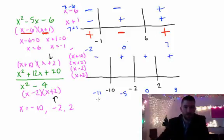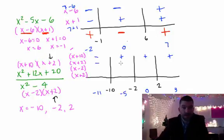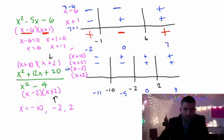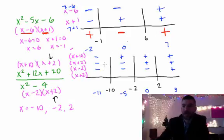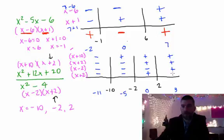For (x plus 2): negative 11 plus 2 is negative, negative 5 plus 2 is negative, 0 plus 2 is positive, 3 plus 2 is positive. For (x minus 2): negative 11 minus 2 is negative, negative 5 minus 2 is negative, 0 minus 2 is negative, 3 minus 2 is positive. For the second (x plus 2) factor: negative 11 plus 2 is negative, negative 5 plus 2 is negative, 0 plus 2 is positive, 3 plus 2 is positive.